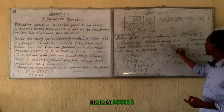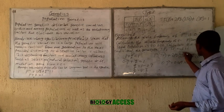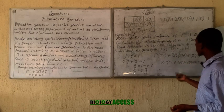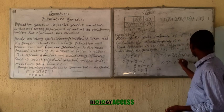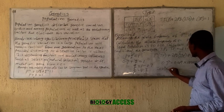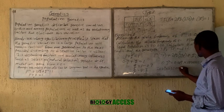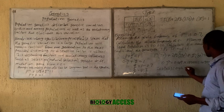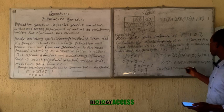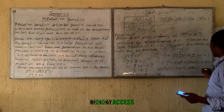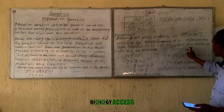To calculate the number of individuals with the Tt genotype, we apply the formula 2pq: 2 × 0.7 × 0.3 = 0.42. Multiplying by the total population gives us 0.42 × 10,000 = 4,200 individuals with the Tt genotype.